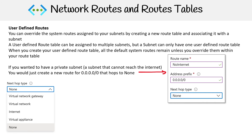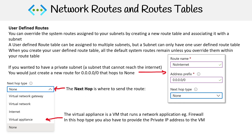Let's talk about hops for a moment. A hop just says where to go. You have a few options: virtual network gateway, virtual network, internet, virtual appliance, or none — those are pretty straightforward. The one that needs a bit of clarity is virtual appliance, which is just a virtual machine that runs a network application, such as a firewall. For this hop type, you'll need to provide the private IP address of that virtual machine.